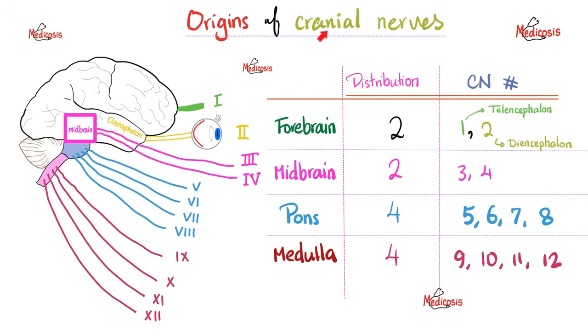Remember that you have 12 pairs of cranial nerves. Cranial nerves 1 and 2 come from the forebrain, 3 and 4 from the midbrain. Cranial nerves 5, 6, 7, and 8 leave the pons, whereas 9, 10, 11, and 12 leave the medulla.